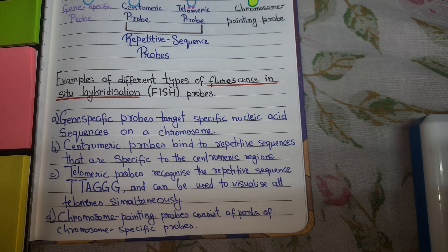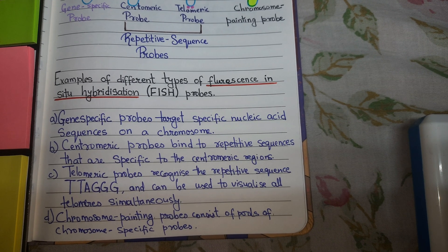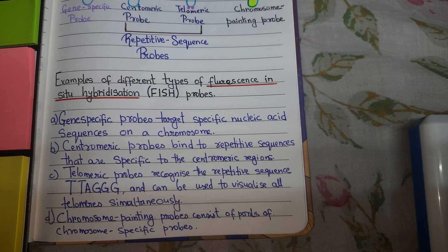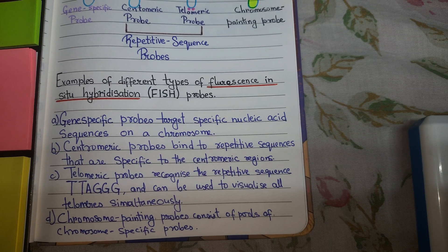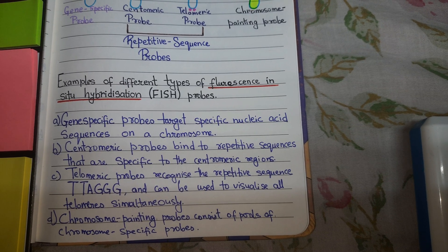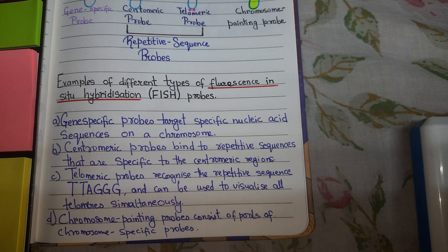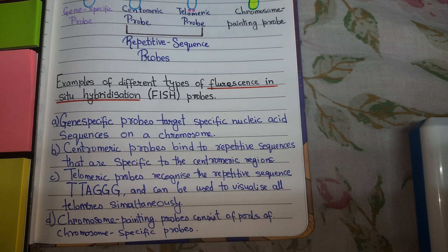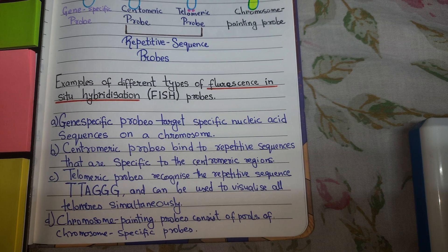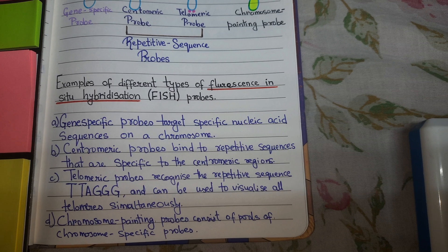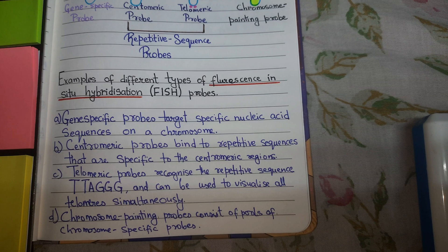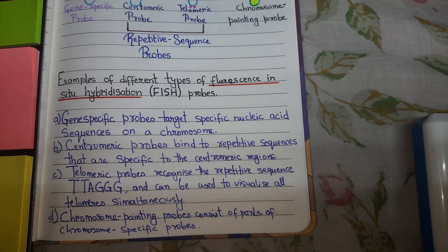Gene-specific probes target a specific nucleic acid sequence on a chromosome. Centromeric probes bind the repetitive sequences that are specific to centromeric regions. Telomeric probes recognize the repetitive sequence TTAGGG and can be used to visualize all telomeres simultaneously. Chromosome painting probes consist of pools of chromosome-specific probes.